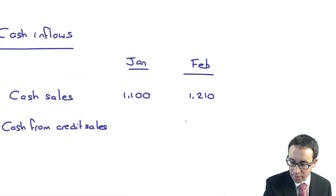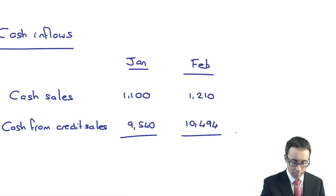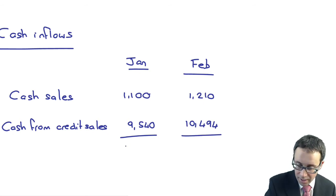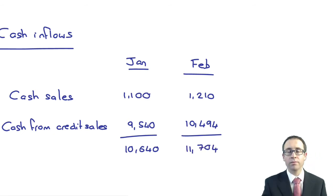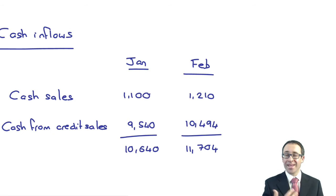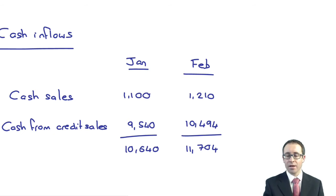So totaling up: January cash inflows are 9,540 and February cash inflows are 10,494. Adding the cash sales, does that give us 10,640 for January and 11,704 for February? Yes — quite a lot to work through and consider. You really do need to think it through slowly and methodically, but there's nothing too challenging there. I think you'll find the cash purchases and credit purchases that come next a little bit more of a challenge.